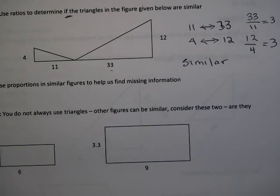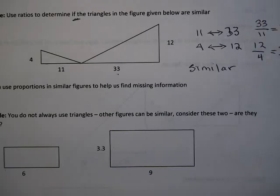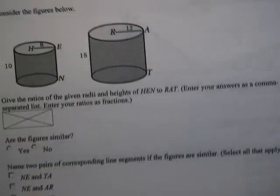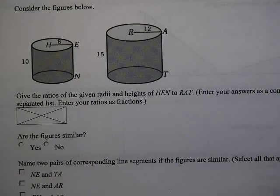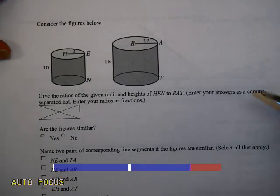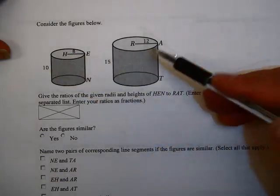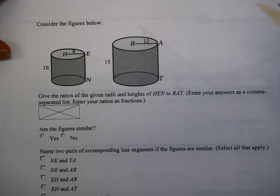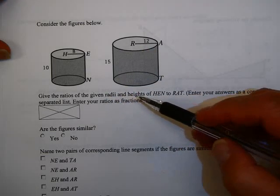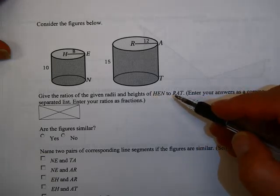Sometimes we have problems where we don't have triangles, so we have to be a little careful. For example, here's a problem from WebAssign. Those 3D figures here, too. And let's take a look at this. It says, here we have a cylinder with a radius of eight and a height of ten, and here we have another cylinder with a radius of twelve and a height of fifteen.